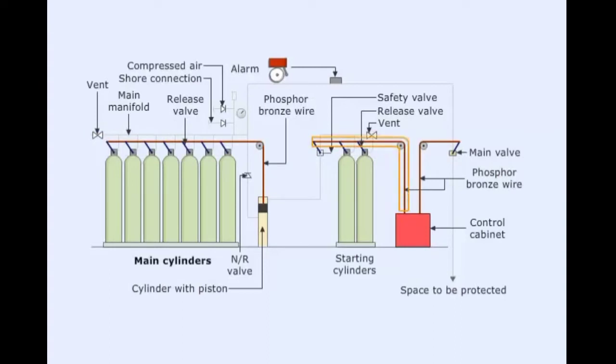The release valves of starting cylinders are connected to a phosphor bronze wire. The free end of the wire terminates inside a control cabinet.